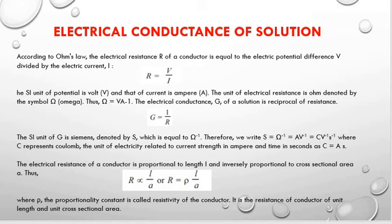The SI unit of G, or electrical conductance, is Siemens, denoted by S, which is also equal to ohm inverse. So S = ohm⁻¹ = ampere per volt = coulomb per volt per second. The unit of electricity related to current strength in amperes and time in seconds is: C = A × s. The electrical resistance of a conductor is directly proportional to its length and inversely proportional to its cross-sectional area.